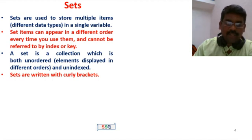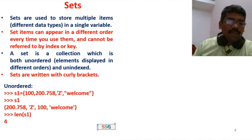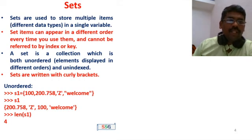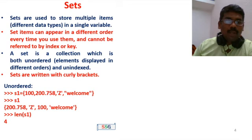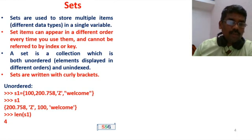Sets use curly braces — curly brackets. For example, an unordered set with values: 100, 200.7, 58, 'Z', double quotes 'Welcome'. Store it as S1. When you print S1, the output is: 200.7, 58, 'Z', 100, 'Welcome' — the order may differ each time.